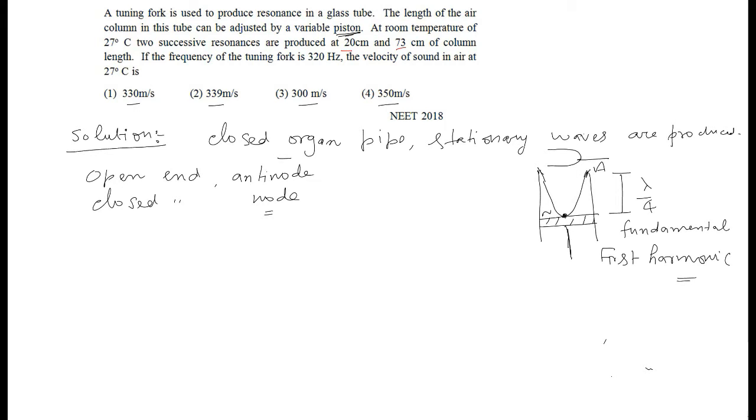So, the length can be increased, length of the air column can be adjusted by moving the piston down or up. Now, in the case of closed organ pipe, the various frequencies: first harmonic, length L is lambda by 4.